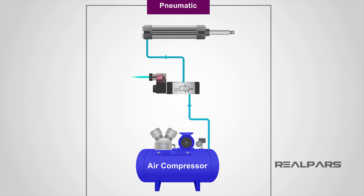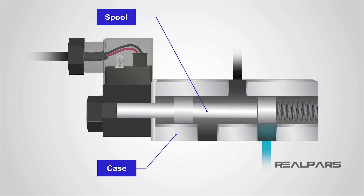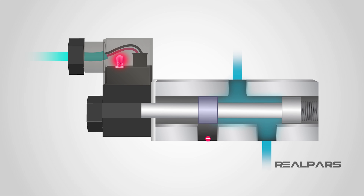Essentially, a spool valve is a cylinder inside a sealed outer case. There are several chambers drilled through the case from one side to the other. These are commonly known as ports. The function of the spool is to move within the sealed case and provide the function of either blocking or opening these ports, depending on the position of the spool.